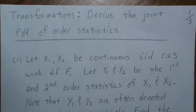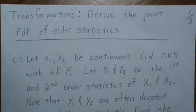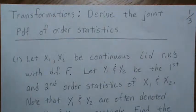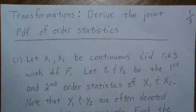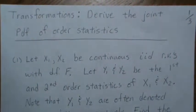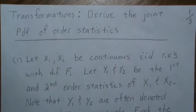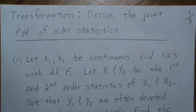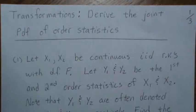Hello, here's the next video in a series I'm calling 'Transformations of Random Variables.' In this video we're going to derive the joint PDF of order statistics. We'll start simple with a sample size of 2, then derive the joint distribution for a sample size of 3, and then a pattern will emerge so we can do it for a sample size of n.